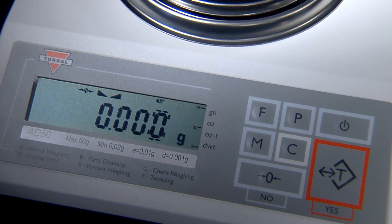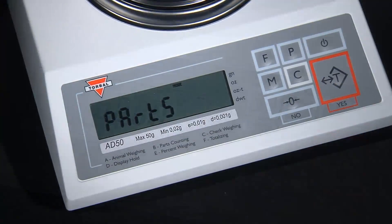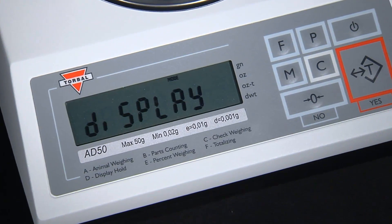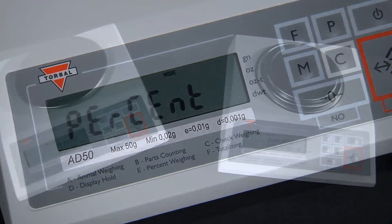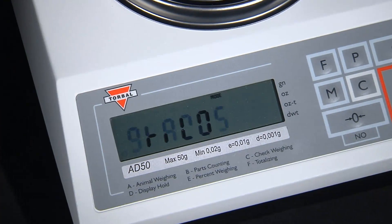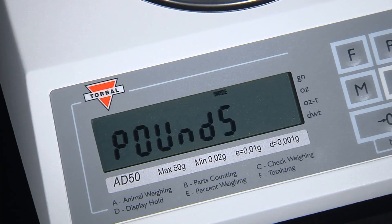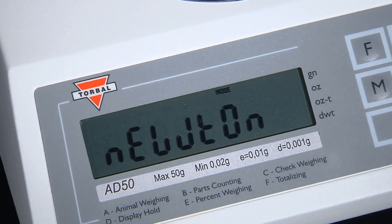Each AD scale incorporates seven application modes such as parts counting, animal and dynamic weighing, percent weighing and totalizing. The scale also weighs in nine different units: grams, kilograms, carats, pounds, newtons, grains, ounces, ounces troy and penny weight.